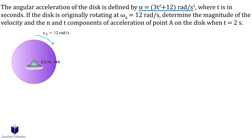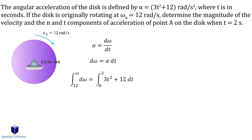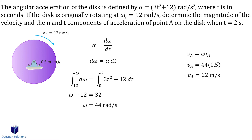That means we need an equation to relate angular velocity with angular acceleration. We know angular acceleration is equal to the derivative of angular velocity with respect to time. Let's rearrange it, and if we take the integral, we can get the angular velocity. We know the initial angular velocity is 12 rads per second and the time is from 0 seconds to 2 seconds. Remember, this gives us angular velocity, not the magnitude of velocity. To find the magnitude, we use the equation v = r·ω and plug in the values we know. Solving gives us the magnitude of velocity.